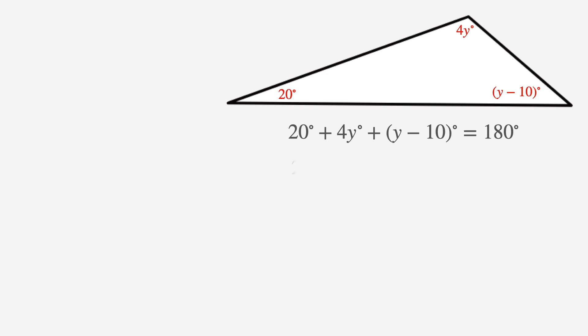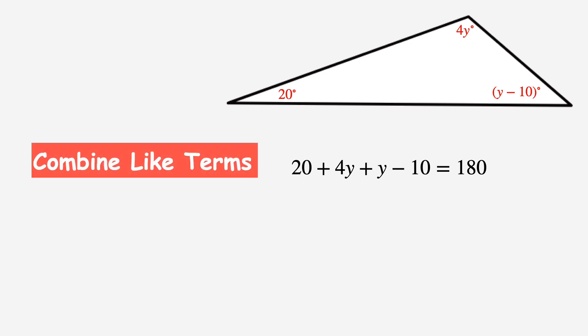So first, I want to rewrite the equation to remove the degree symbols. You don't have to do this, but I do it because it just cleans it up a little. Now I'm ready to start solving. The first step is to combine like terms. I see that positive 20 and negative 10 are like terms, so let's combine those first. Positive 20 plus negative 10 equals positive 10.